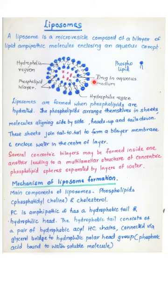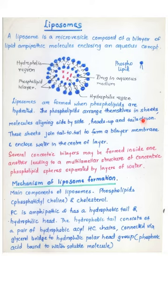Single layered sheets are formed first, which then form bilayers and orient themselves in the form of spheres, enclosing the aqueous layer in the center of the liposome. Several such concentric bilayers may be formed one inside the other, giving rise to a multi-lamellar structure of concentric phospholipid spheres which are separated by layers of water.